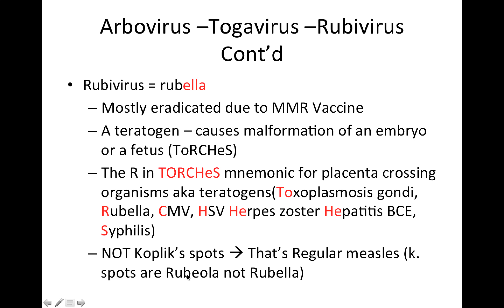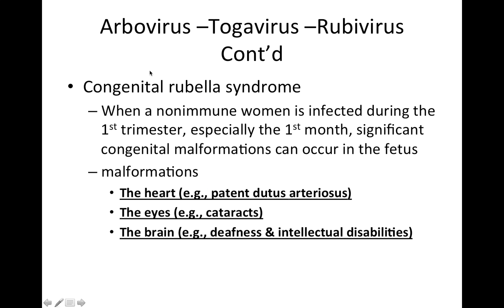Koplik spots are for rubella, not rubella. Remember the mnemonic: the cop spots your areolas. There is a congenital rubella syndrome that you have to be aware of. This occurs when a non-immune woman is infected with the virus during the first trimester, especially during the first month, and it can result in significant congenital malformations including patent ductus arteriosus in the heart, cataracts in the eyes, and deafness and intellectual disabilities in the brain.